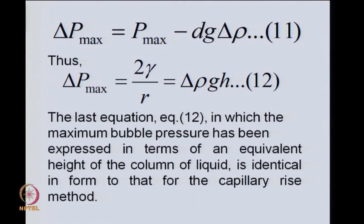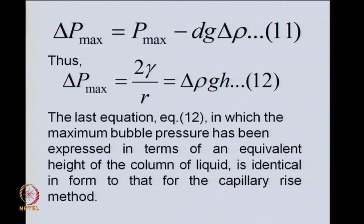So delta_P_max = P_max − D × g × delta_rho, and delta_P_max = 2*gamma / R = delta_rho × g × H, where H is from the manometric arrangement for measuring the pressure. If you look at the right-hand side, D × g × delta_rho, expressed in equivalent terms of a column of liquid, this equation is identical in form to the one from the capillary rise method.